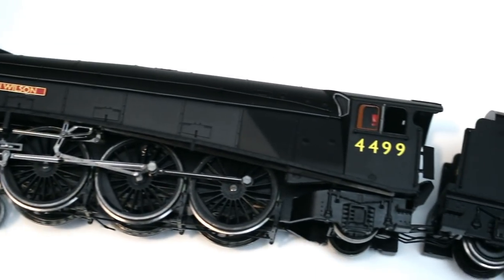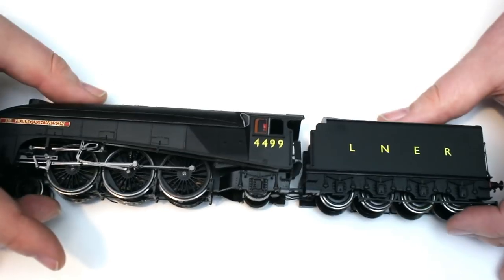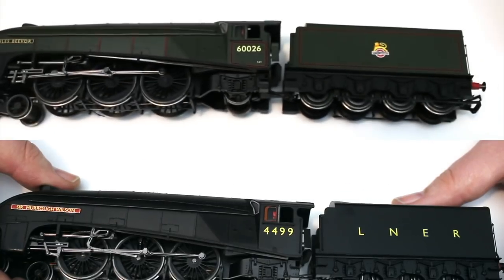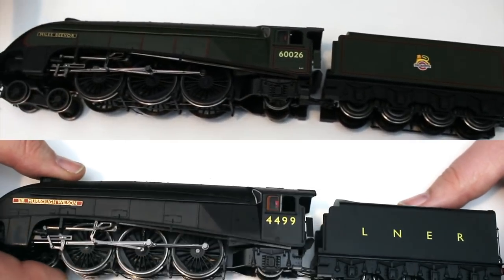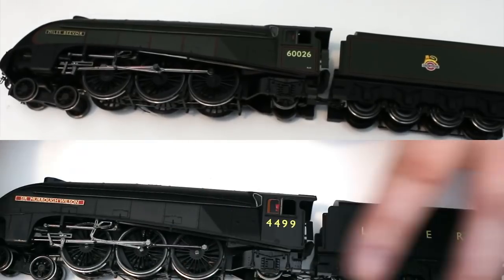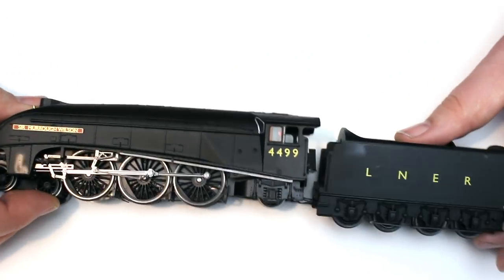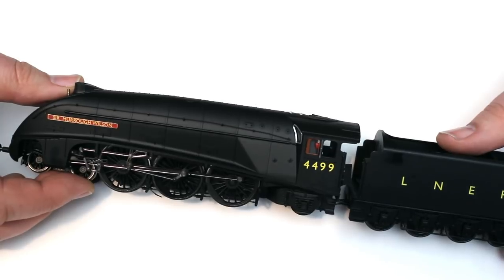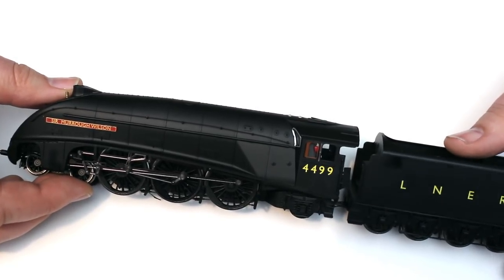But if you want the more authentic look and you can accommodate that they do give you a set of wheels plus we've got the drain cock pipes as well for underneath the front cylinders. These again, only fit these if you have very gentle curves on your layout or it's going in a display cabinet because otherwise it's not going to get round corners.